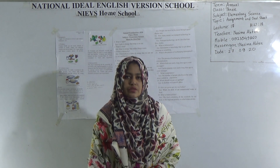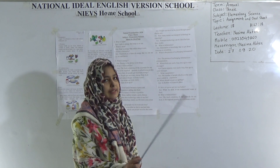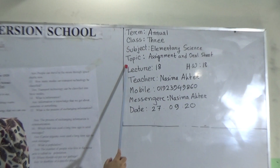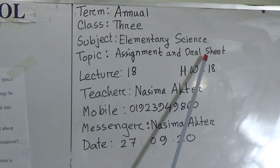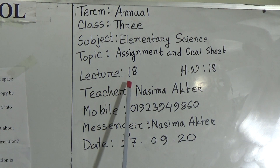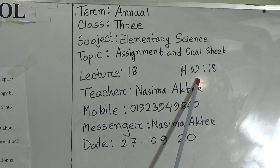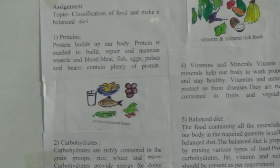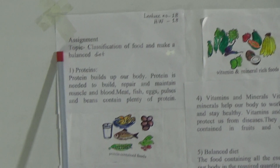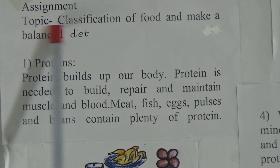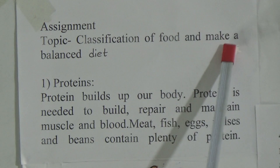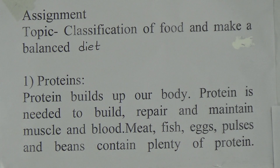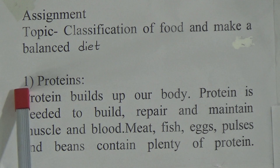We have already provided you the oral sheet, so please keep practicing it. Our today's topic at a glance is assignment and oral sheet, and this is lecture number 18. I will give you SW — today's SW number will be number 18. Let us start today's class. First, we will discuss our assignment. Our today's assignment topic is classification of food and make a balanced diet.